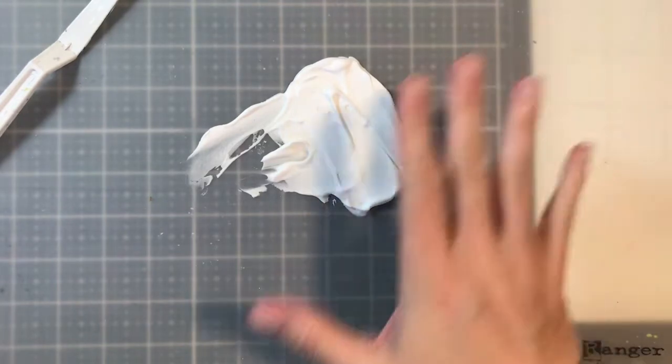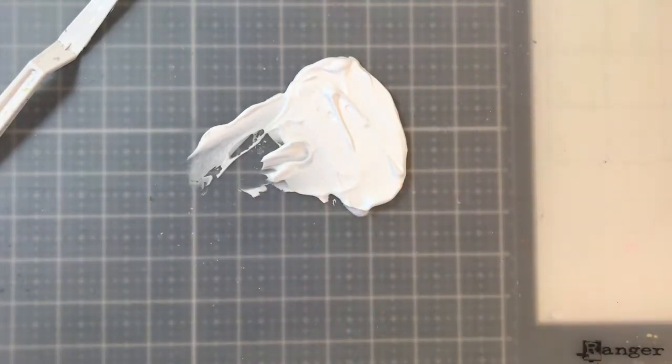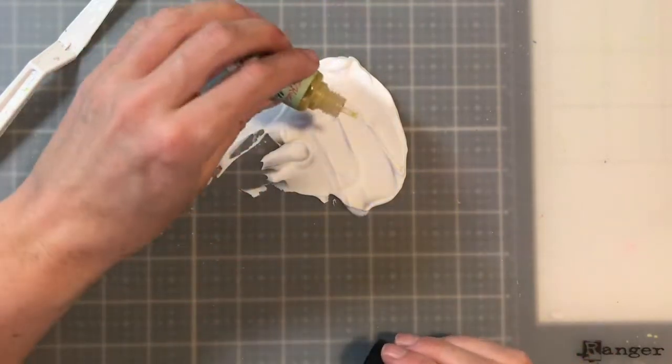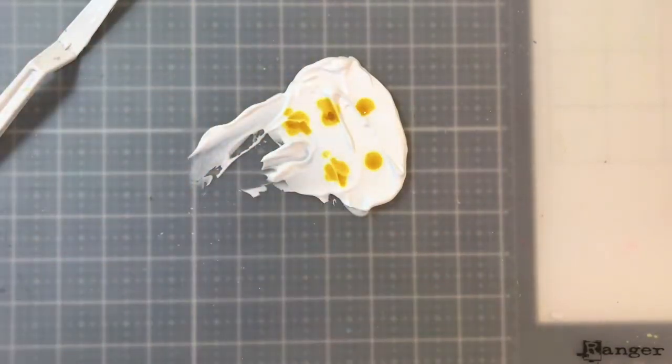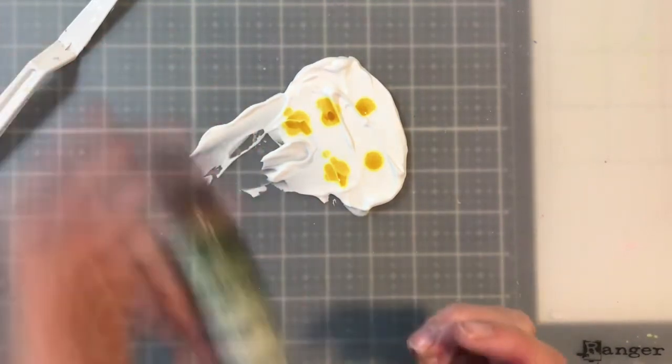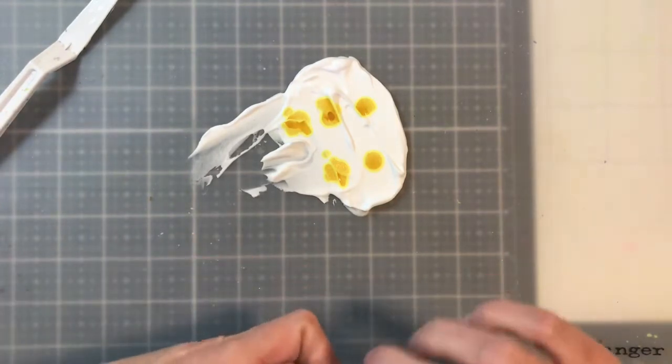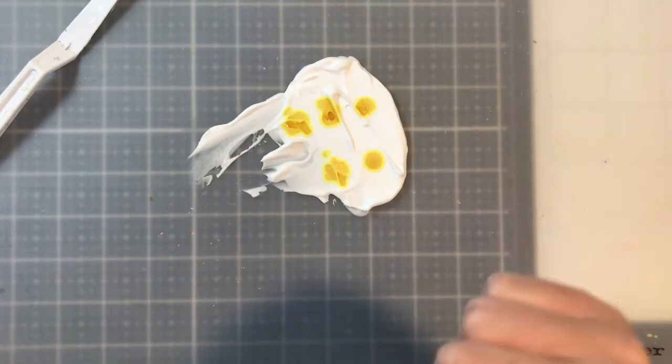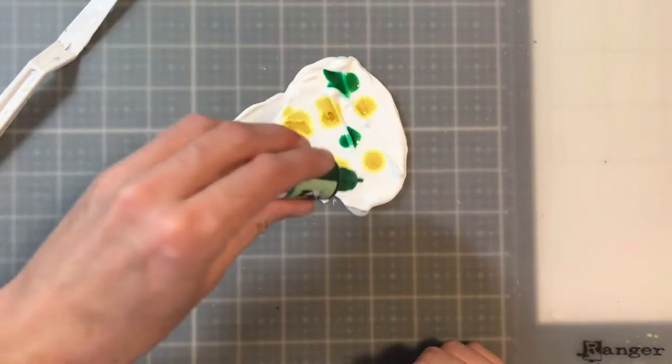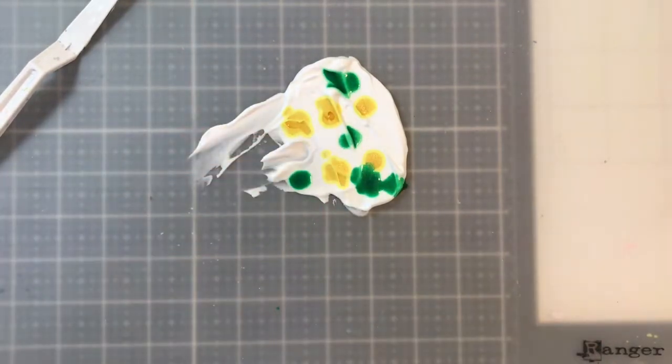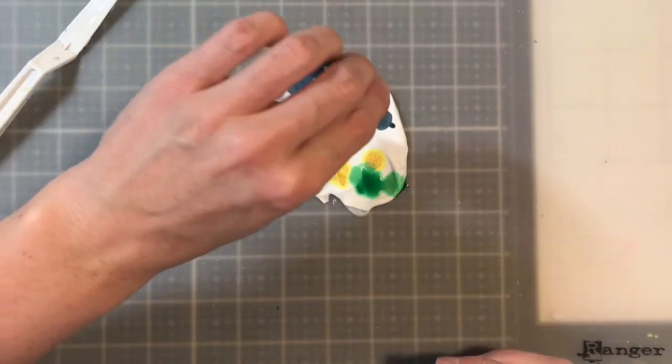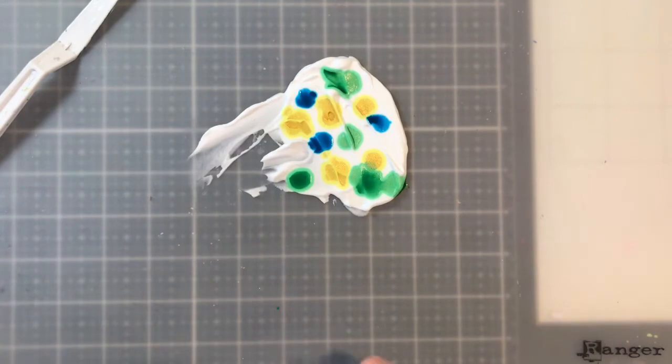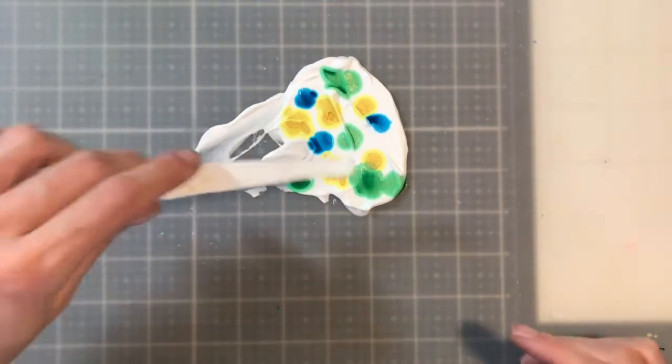Then you are going to take just something to kind of smooth it out a little bit. It doesn't have to be perfectly smooth, just enough to have a little bit of a work space on it. And then you're going to take and put down a little bit of the colors. So I'm going to be using Zilla, and I like the sparkle on this.